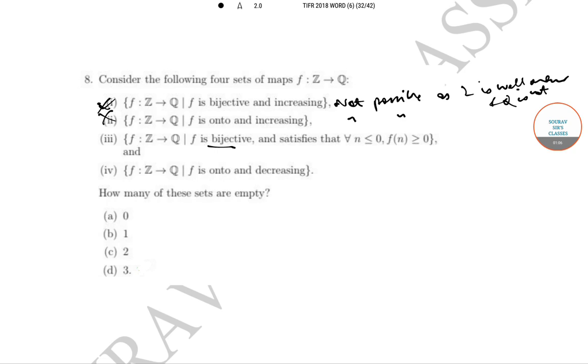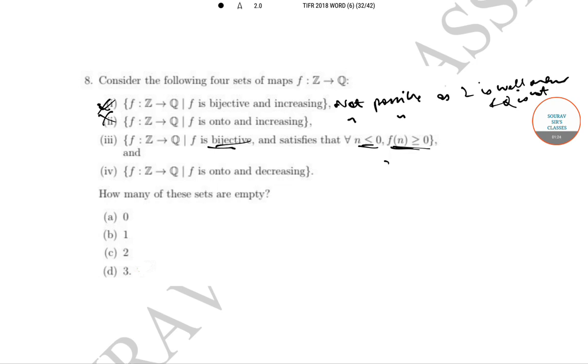Option 3: since F is bijective and for n ≤ 0, F(n) ≥ 0, this is possible where Z+ maps to Q- and Z- maps to Q+. So statement 3 is correct. Statement 4: F is onto and decreasing.